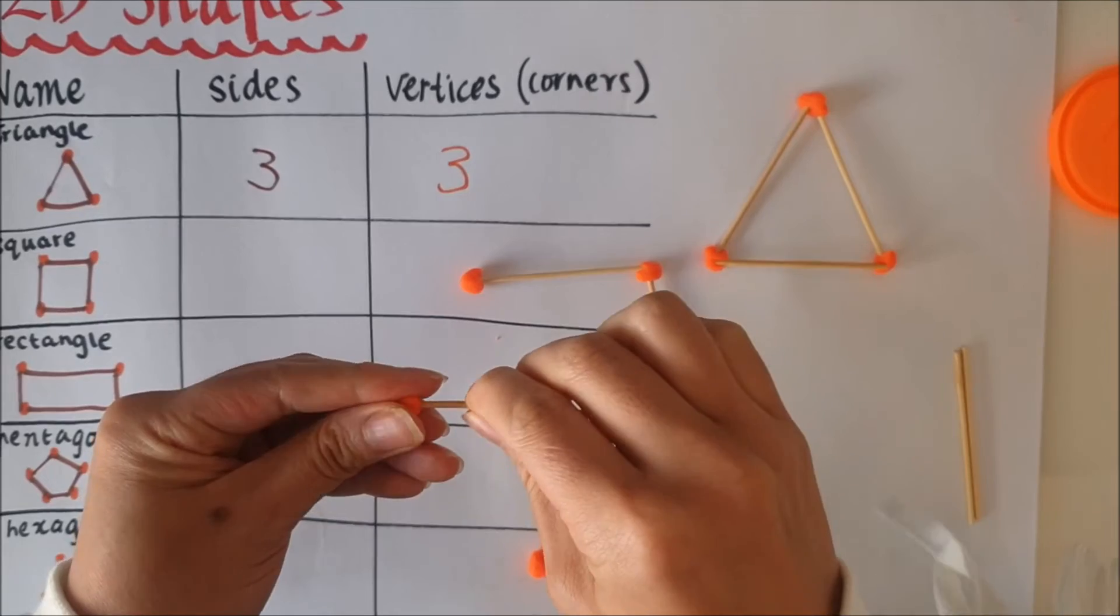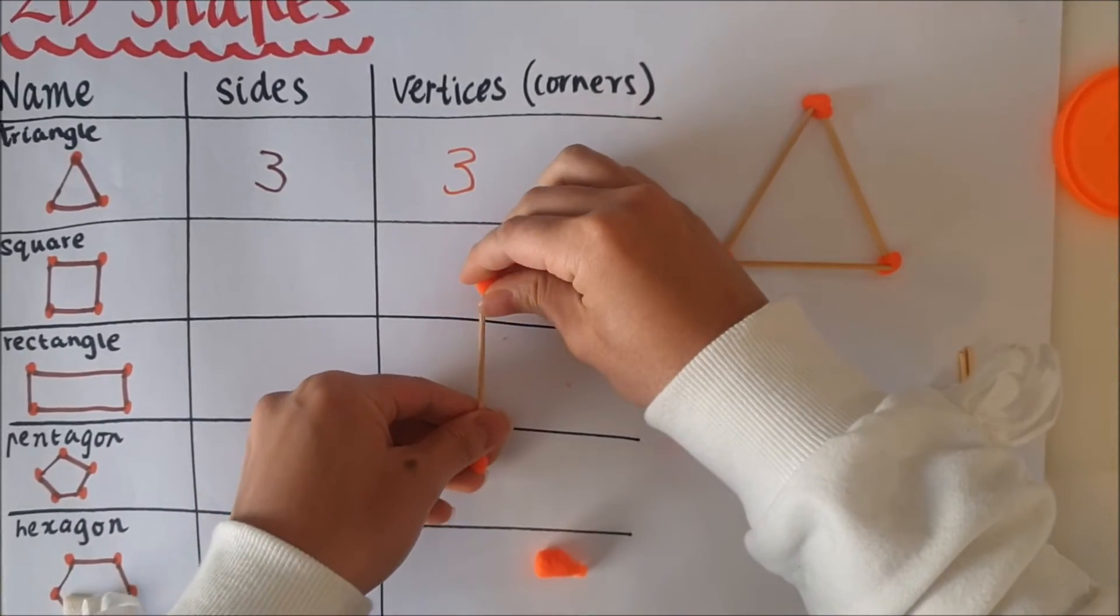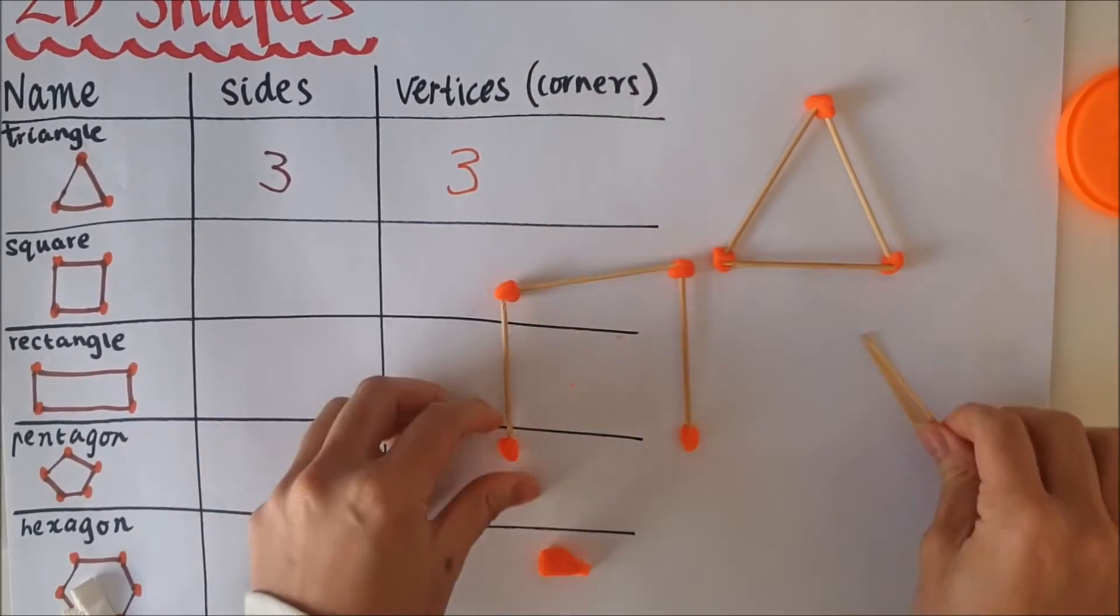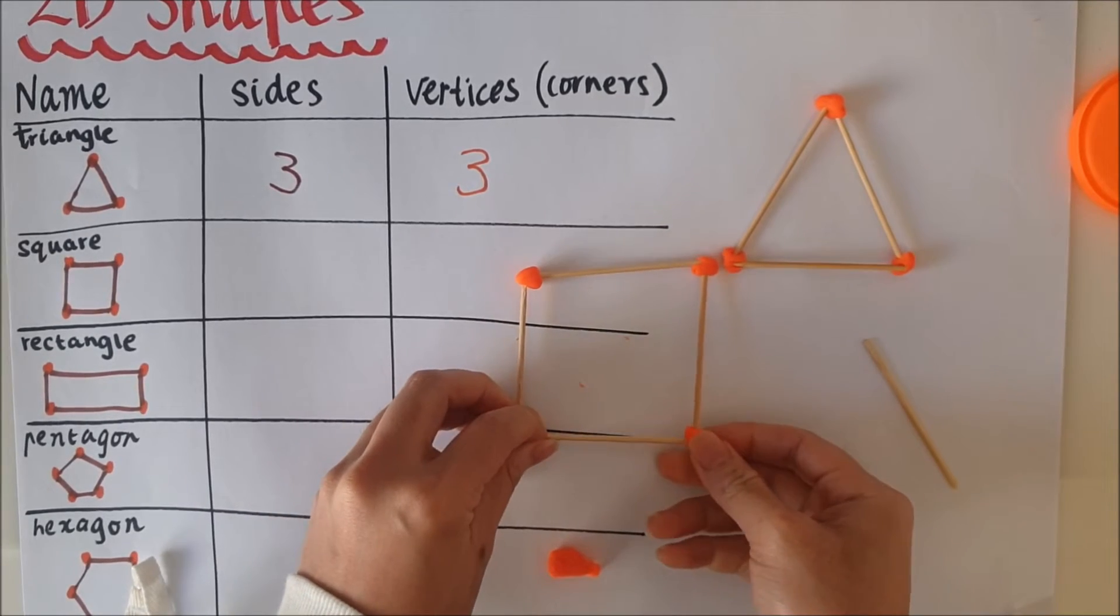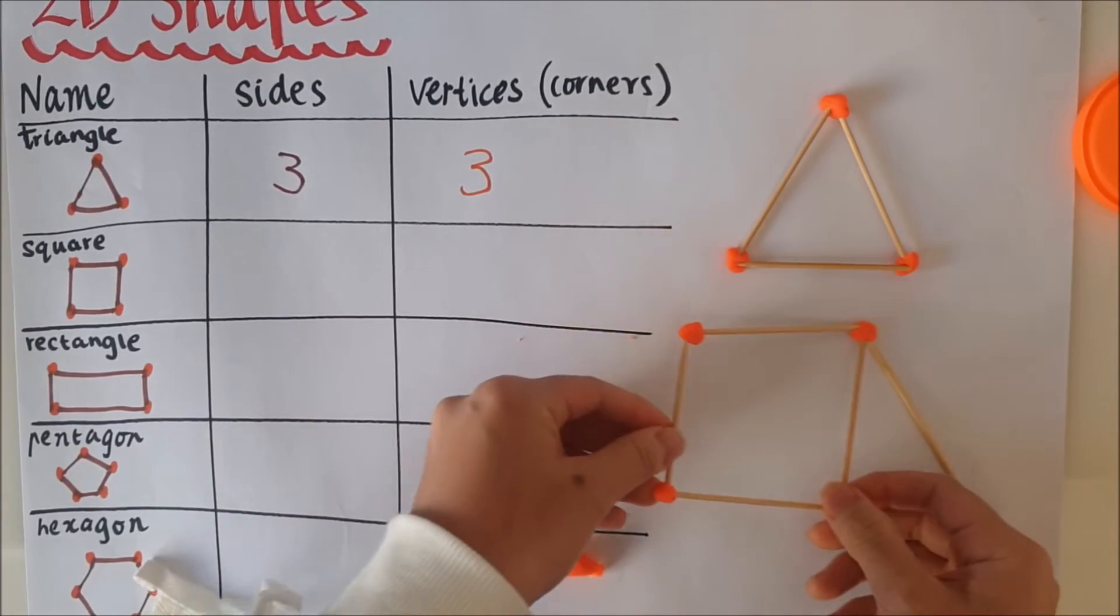Because you're using your fingers to roll the play-doh and make the shape. So here I have a square.